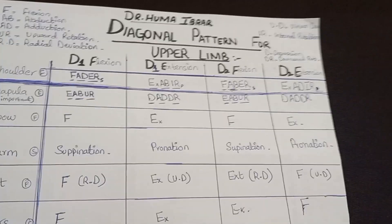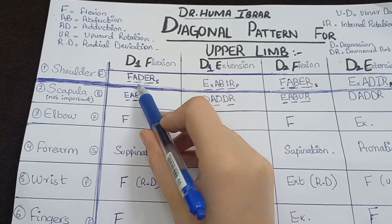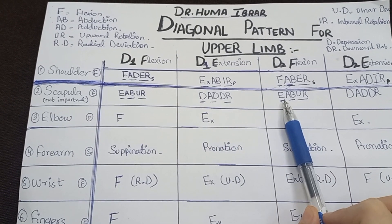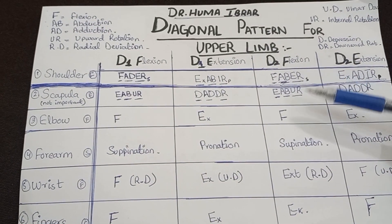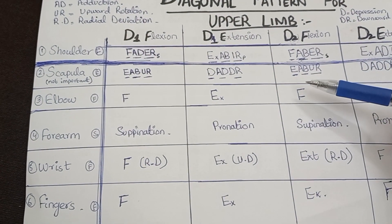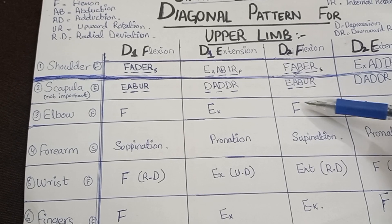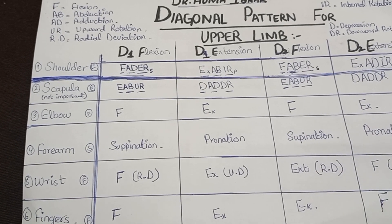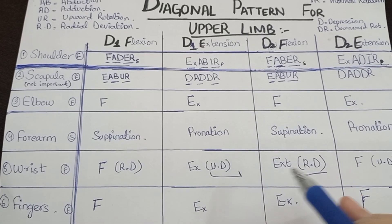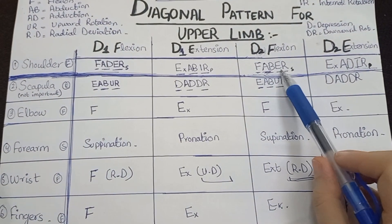The mnemonic for shoulder D1 flexion and D2 flexion is almost similar, but the difference is adduction versus abduction: in D1 flexion there is adduction, and in D2 flexion there is abduction. For the scapula there is extension, abduction, and upward rotation. Since there is flexion in the shoulder, there will be flexion in the elbow. Remember: in D2, there is flexion in two joints and extension in two joints. Flexion in shoulder and elbow; extension in wrist and fingers; and radial deviation in the wrist. There is also supination.